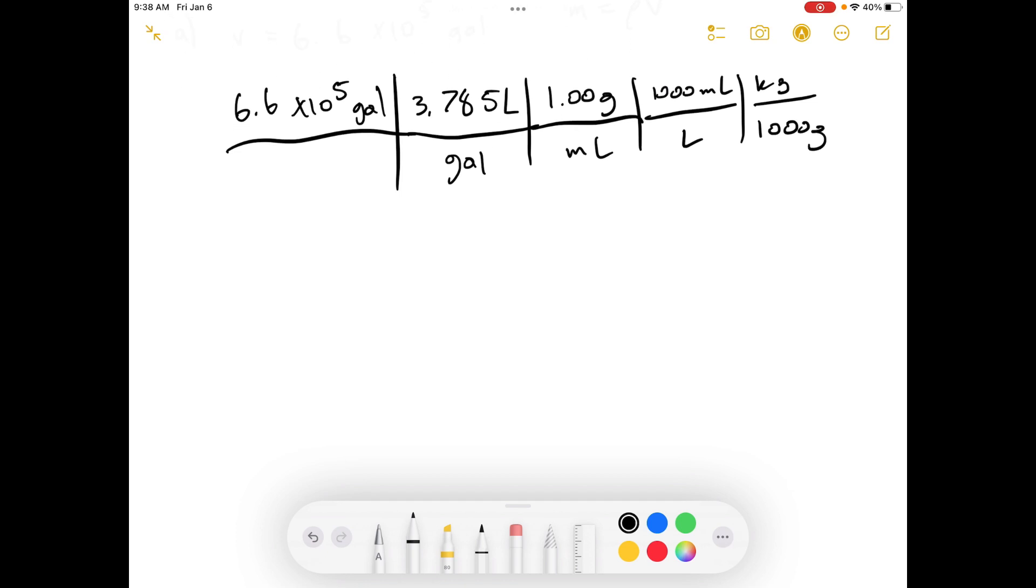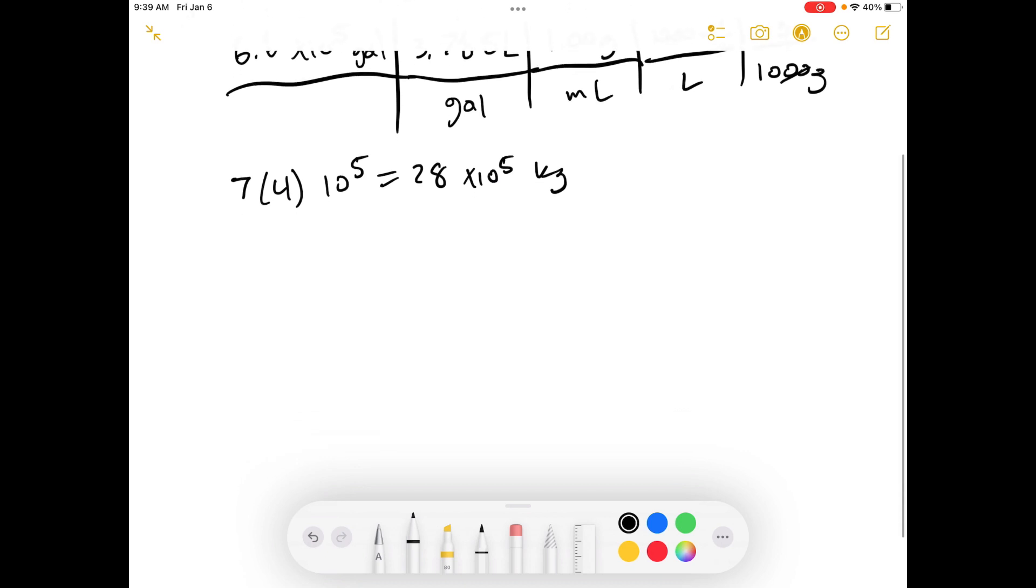Now let's do our order of magnitude adjustment. This first number is about 7. The next number is about 4, then 1. Then we've got 1, but it's times 10 to the 3, but both of those cancel out. So we've got times 10 to the 5 here from our first number. And so the number of kilograms is about 28 times 10 to the 5 kilograms. That's our first estimation for the mass of water in an Olympic-sized swimming pool.